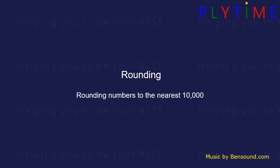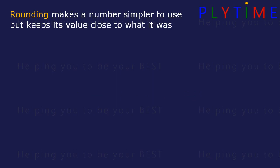Rounding. Rounding numbers to the nearest 10,000. Rounding makes a number simpler to use but keeps its value close to what it was.